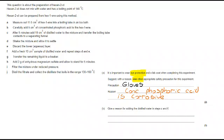Onto part B, give a reason for adding the distilled water in steps C and F. Well, what we're doing is removing any soluble impurities. So that's one option. We're also removing the excess acid. We're diluting it down. It was concentrated. That means it's not going to catalyze the reaction any further.